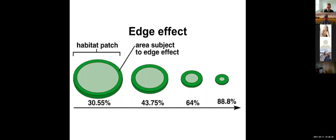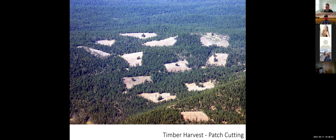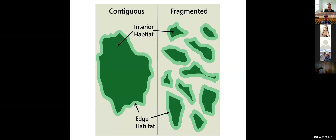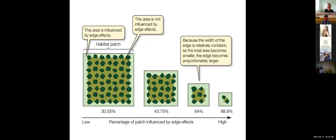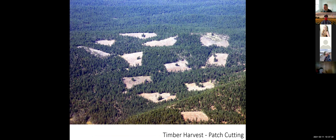Another diagram shows how proportions of edge to interior change as patches get smaller. Even though patch cutting looked like the better option at first, it's actually the more destructive option because it creates too much edge habitat. When we create one big clear cut, it's only creating this much edge habitat. When we do little patches of cutting, it creates proportionally a lot more edge habitat relative to the overall patch size. That's why patch cutting ends up being more destructive — it creates too many edges, and the areas between patches are not actually interior habitat because they're surrounded by so many edges.